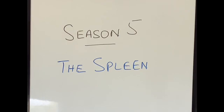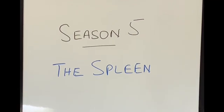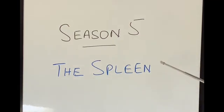In season one we covered the digestive system. In season two we covered our pancreas. In season three we covered the gall bladder and in the last season, season four, we covered the anatomy of the liver and things that can go wrong with our liver. Today we are starting a new season, season five, and this will focus on the spleen.